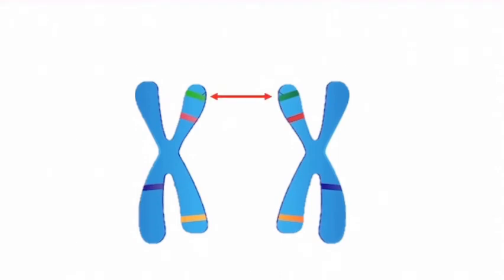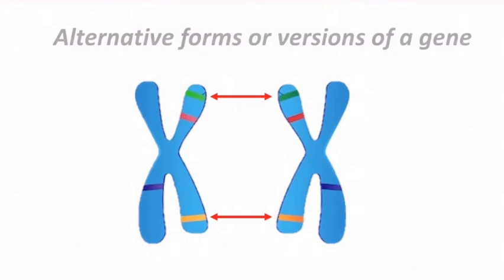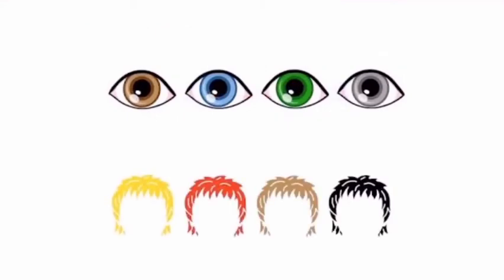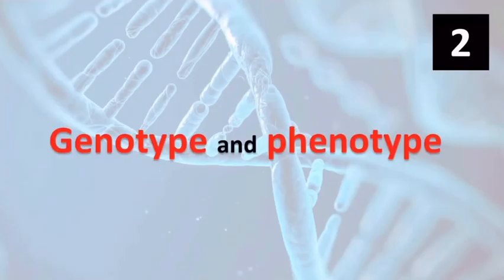Now what is allele? We know we inherit one copy of gene from our father and one copy from our mother. For example, imagine these are the genes responsible for our eye color and hair color. So we have got two versions of genes. The alternative forms or versions of a particular gene are called alleles. And you see in the population there are so many alternative forms. These are called alleles for that particular gene.